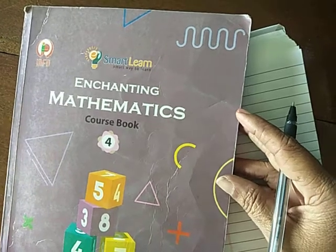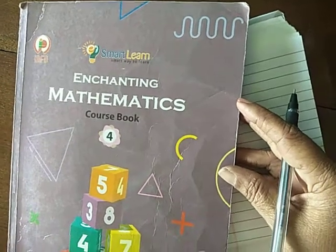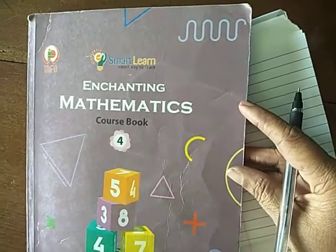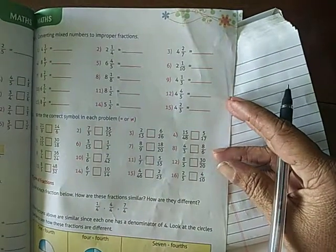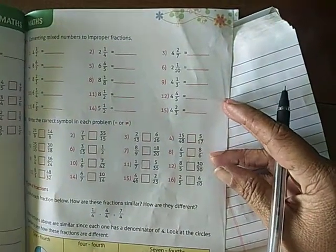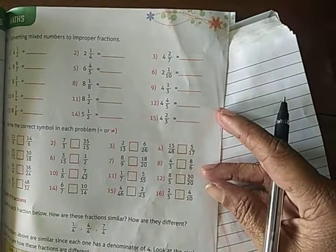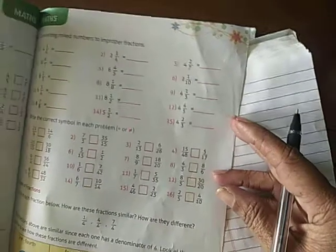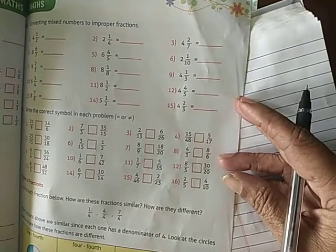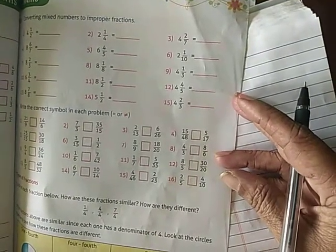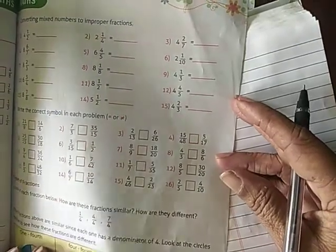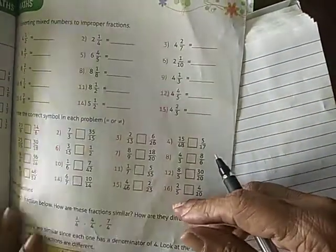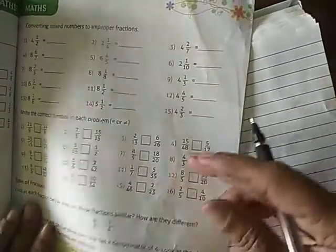Good morning children. We are studying the fractions lesson. Today we are going to continue the fractions lesson. We have already learnt how to write equivalent fractions, which is greater or lesser, converting improper fractions to mixed fractions, and converting mixed fractions to improper fractions. So today we are going to study about types of fractions.